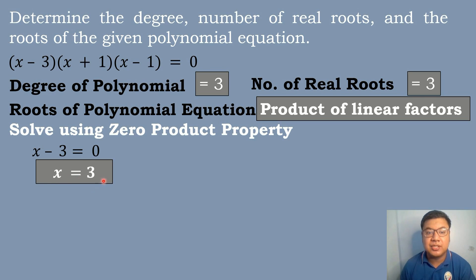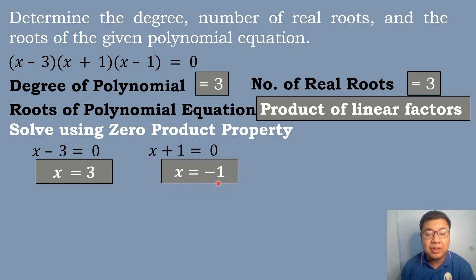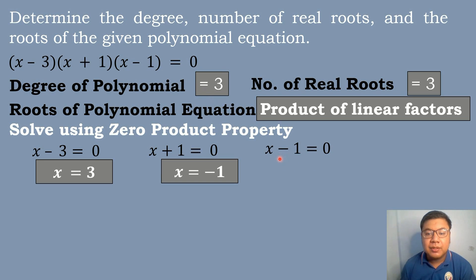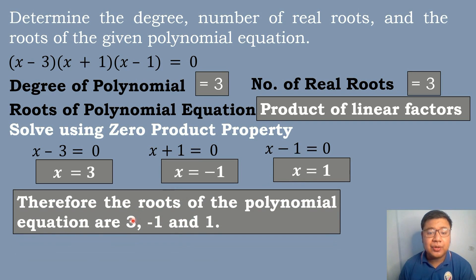For the second root, x + 1 = 0, so x = −1. For the third root, x − 1 = 0, so x = 1. Therefore, the roots of the polynomial equation are 3, −1, and 1.